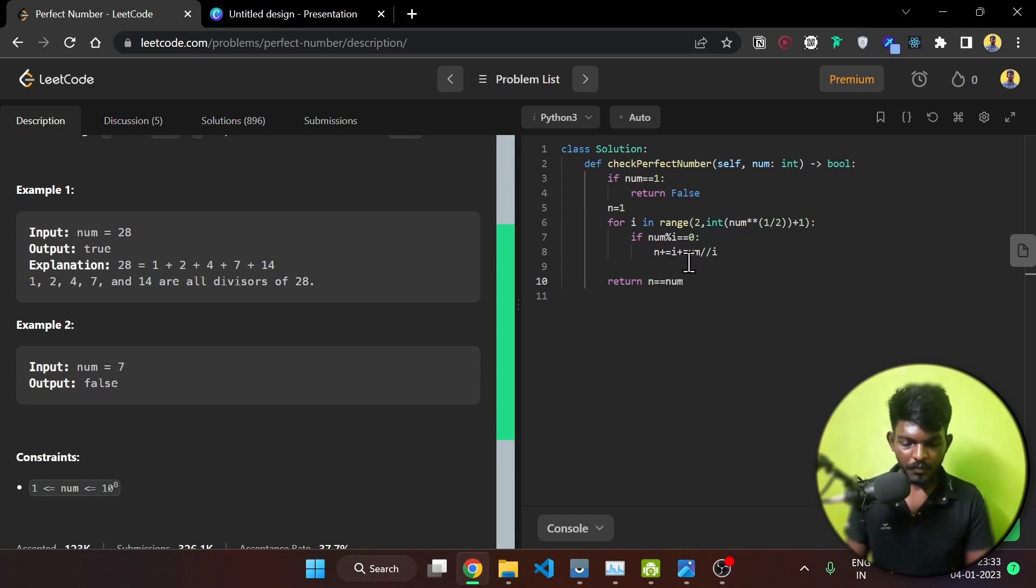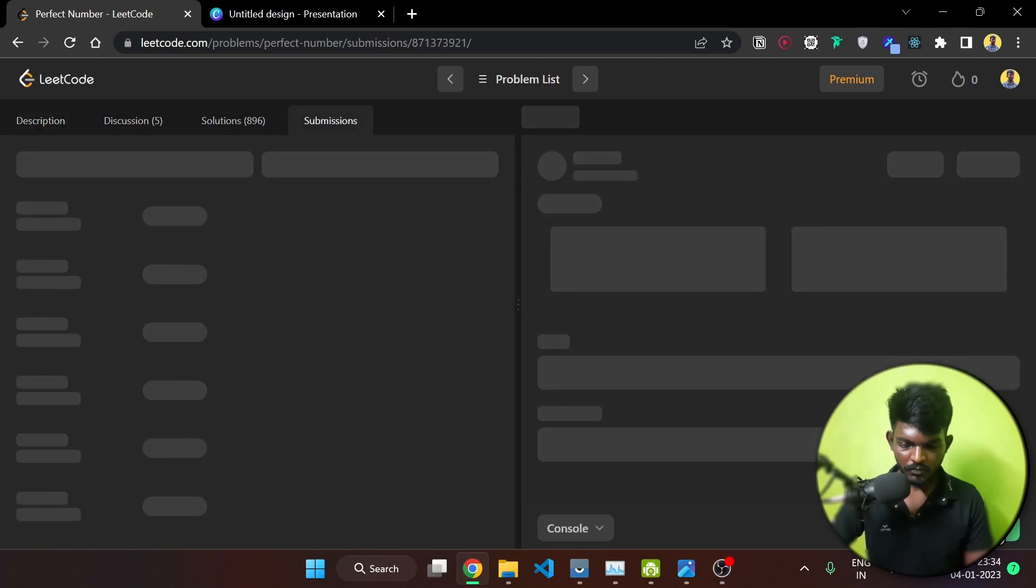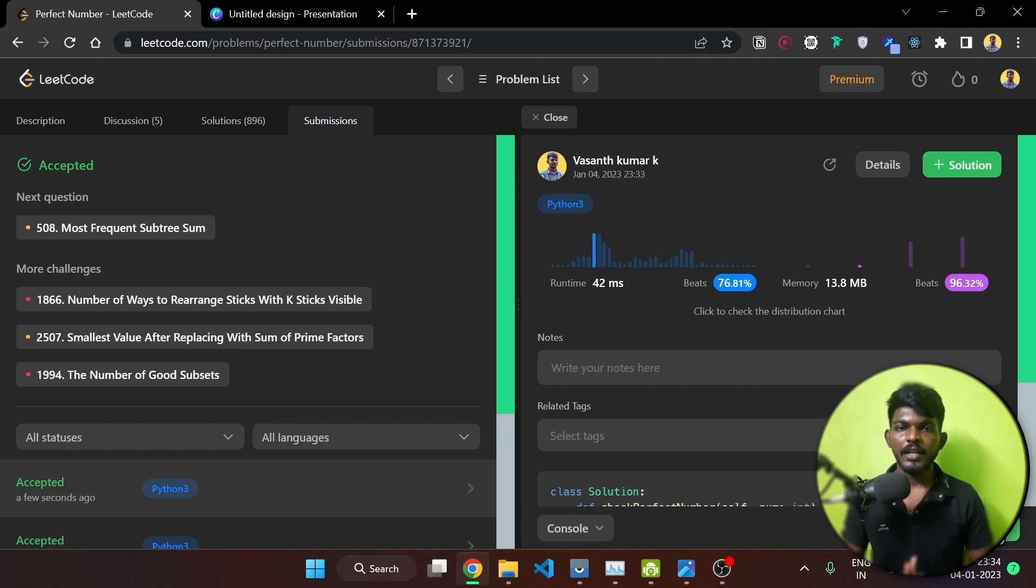Let's check the code. If we add the same thing, it will return true or false. This is a simple statement. Let's submit it and check it out. So this is how we solve this perfect number problem. If you have any questions, please like and subscribe. See you in the next video. Until then, bye!